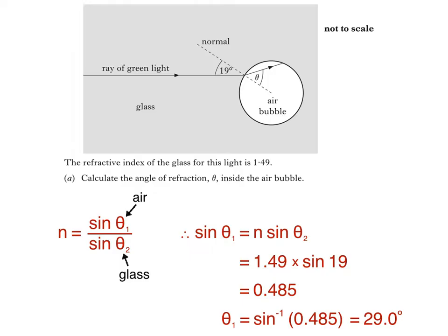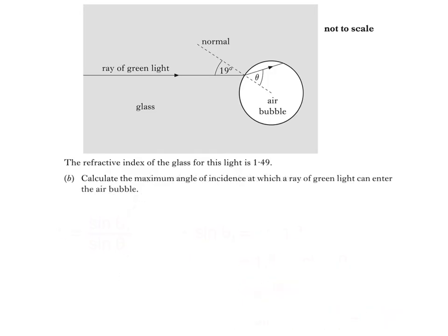Part B of the question asks us to calculate the maximum angle of incidence at which a ray of green light can enter the air bubble. Now if you're not sure what the question is asking, here's a demonstration.